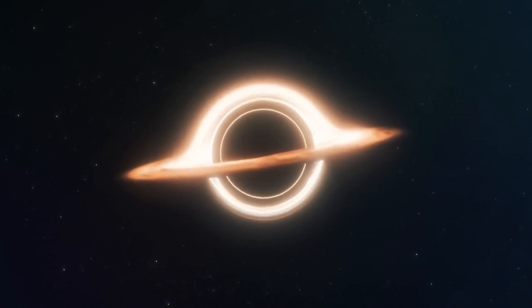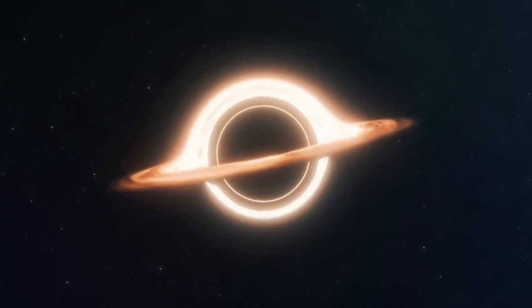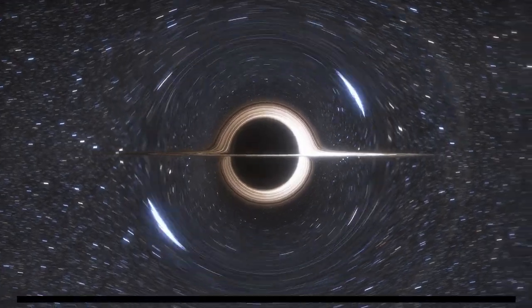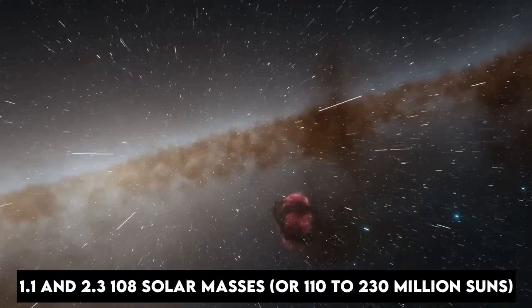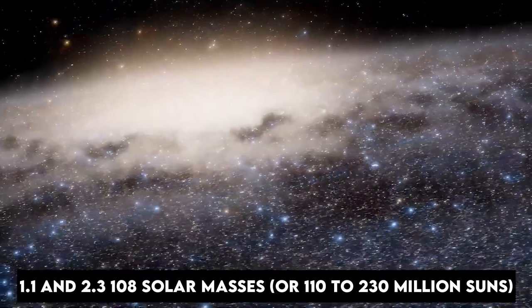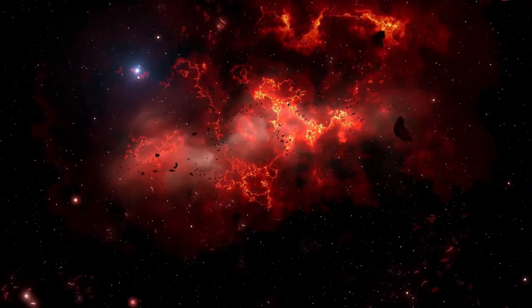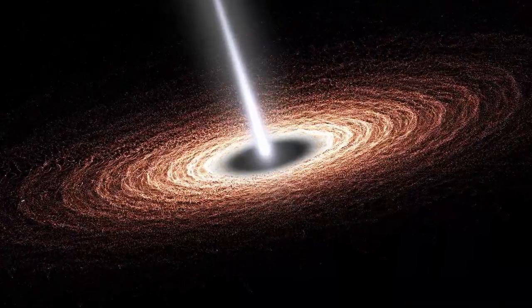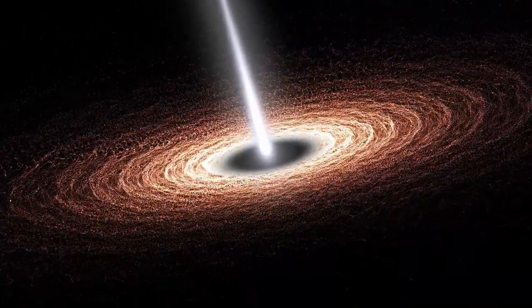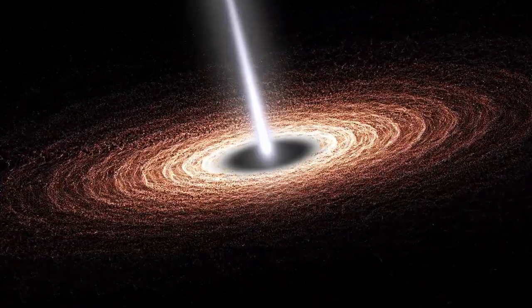A supermassive black hole, located at this second position, was most recently estimated to be between 1.1 and 2.3 times 10 to the 8th solar masses, or 110 to 230 million suns. It's believed that stars clumping together around the perihelion of their eccentric orbits around the core black hole is what causes the brighter points of concentration.